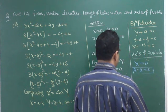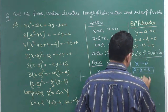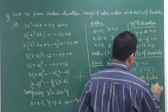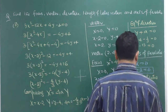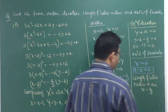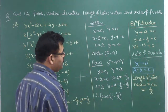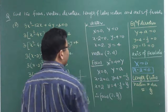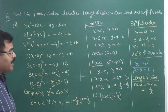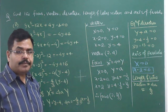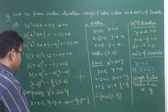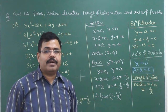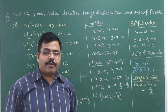Finally, the length of latus rectum is |4a| = |-4/3| = 4/3. So the length of latus rectum is 4/3. To summarize: for all such problems you need to remember the two general equations — x² = 4ay or y² = 4ax — and reduce the given equation to one of these standard forms.